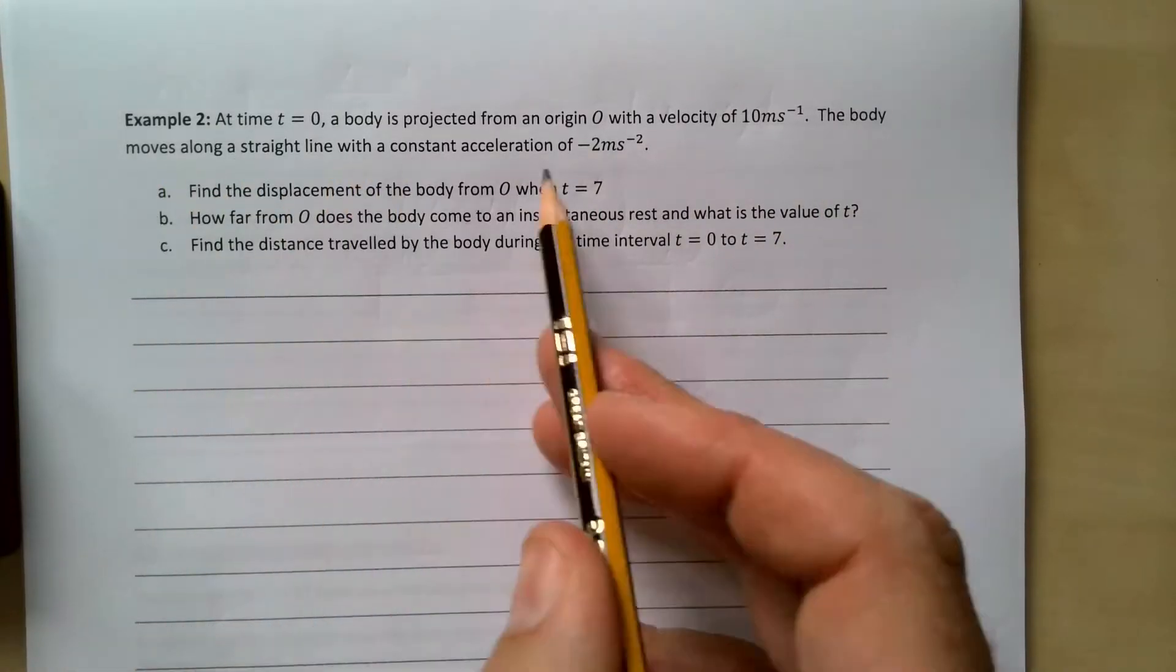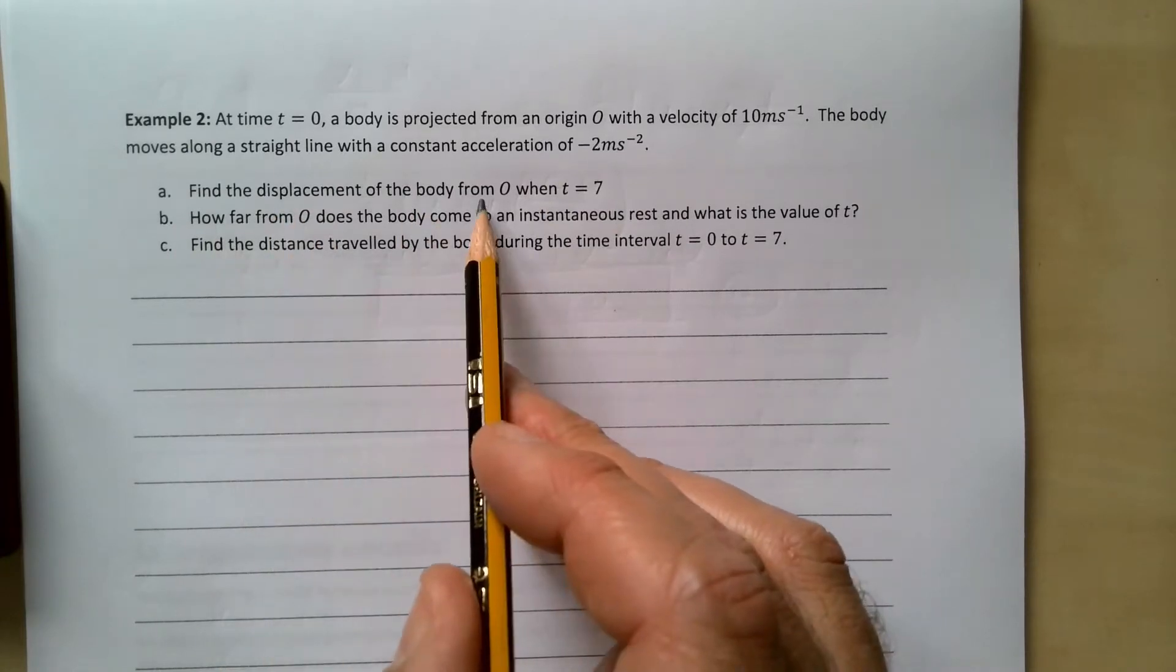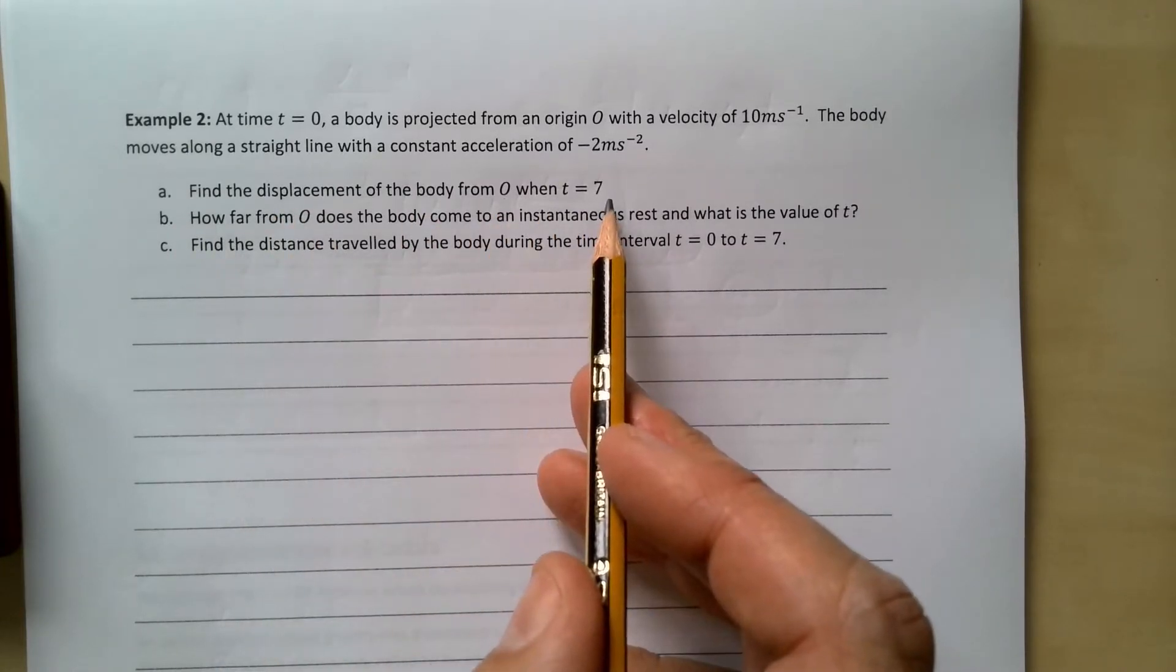The body moves along a straight line with a constant acceleration of negative 2 meters per second. Find the displacement of the body from zero when t equals 7.